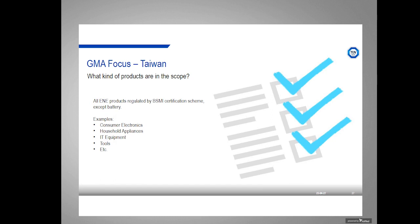The accepted test report is the CNS standard, which is harmonized with the international standard, so international or European reports can be accepted because of that harmonization. Taiwan controls just the first six substances. The products in scope are all electrical and electronic products under the BSMI certification scheme — except for batteries. This includes household electronics, consumer electronics, household appliances, IT equipment, tools, and so on. ROHS was simply added to that same list of products.